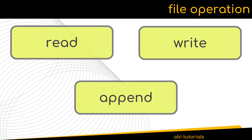There are three basic operations which we can perform on any file: read, write, and append. The read operation can read from any file whether it's a text or a binary. Using write and append operations, we can write or append to a file. The append operation will add the content to the existing content of the file, whereas the write operation will replace the entire existing contents with the new content. Both the write and append operations will create a new file if the file does not exist.